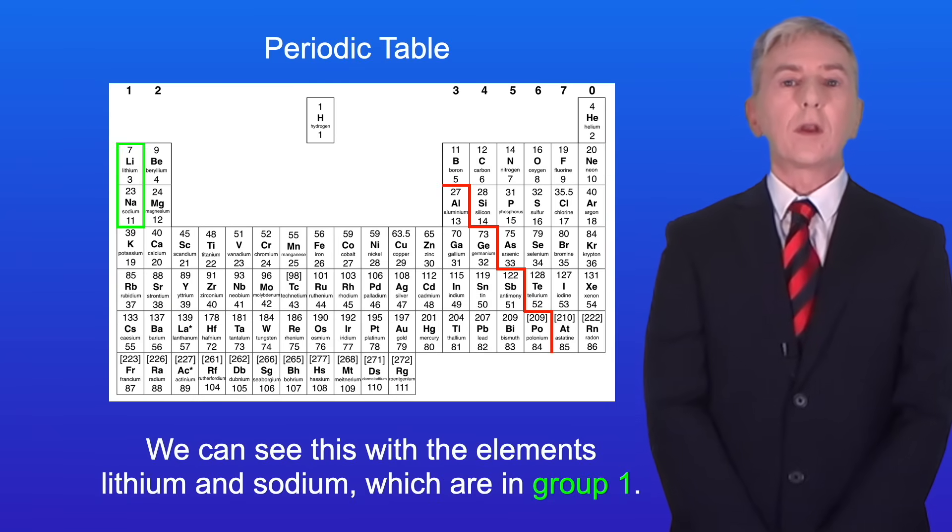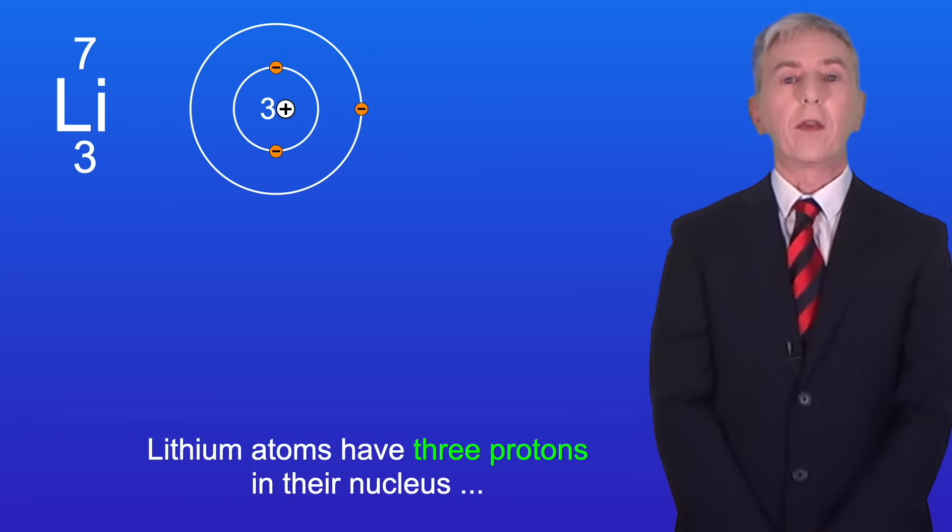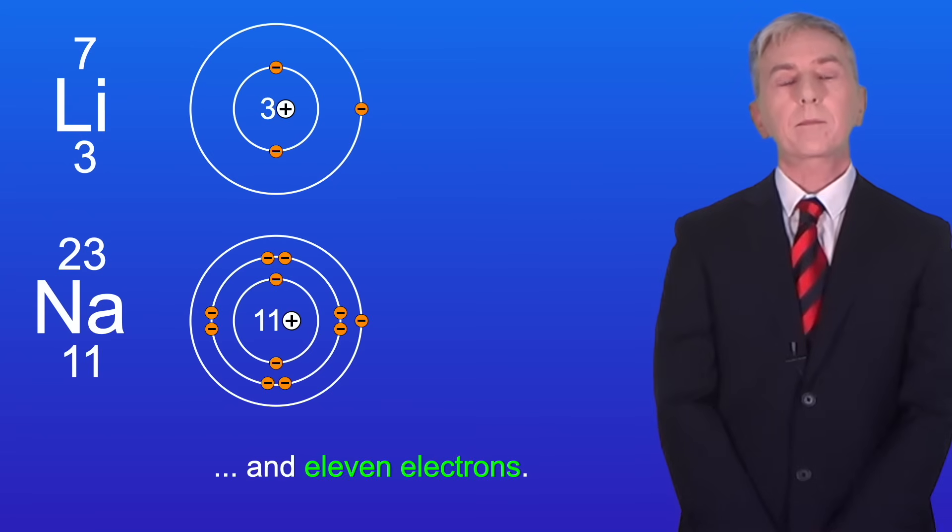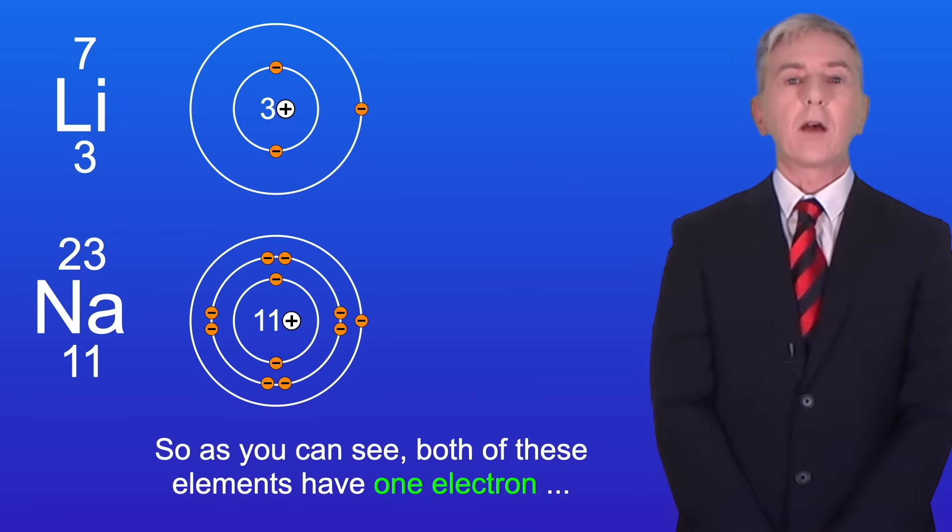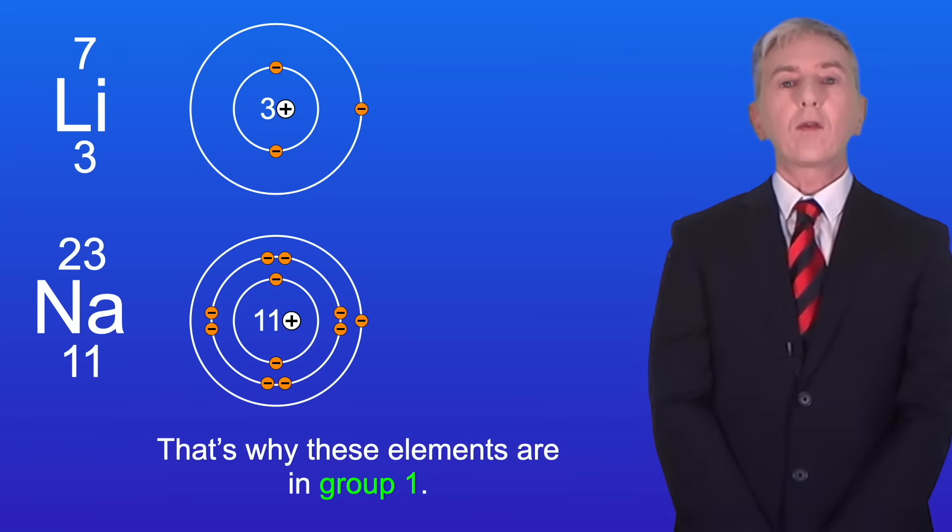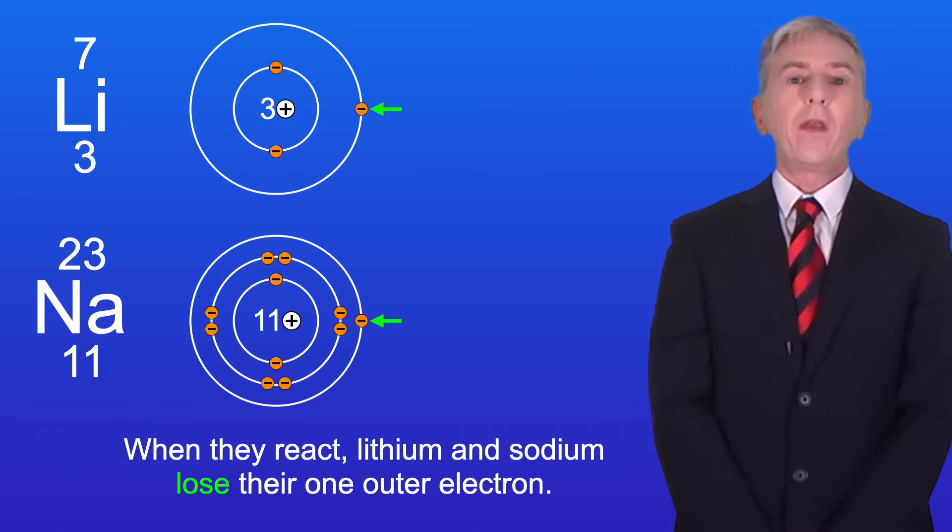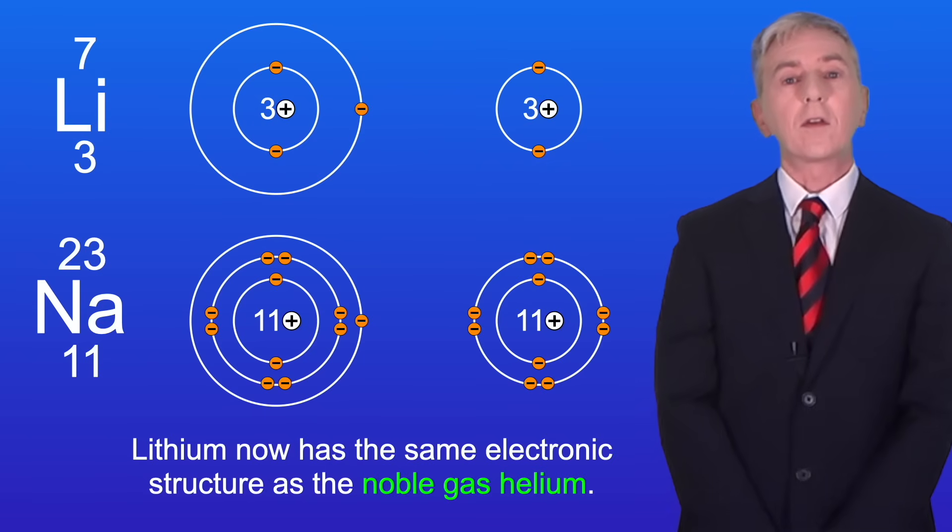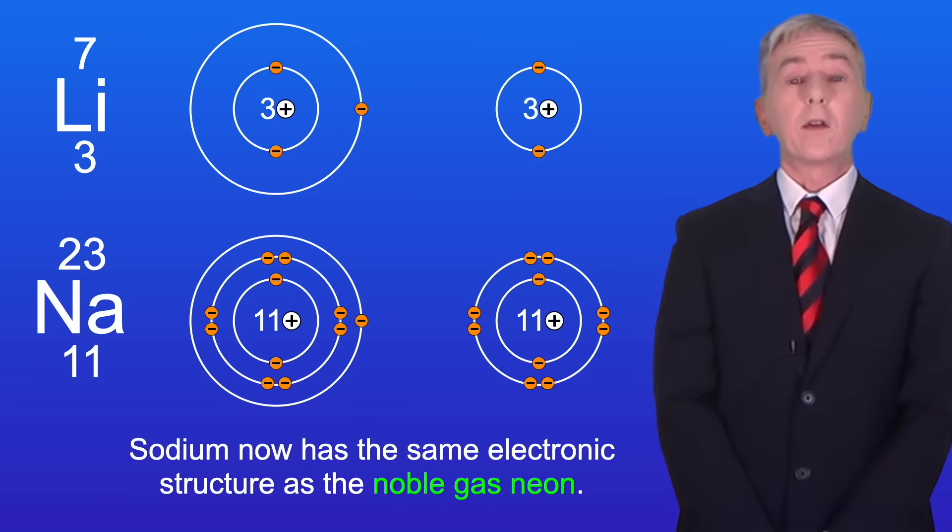We can see this with the elements lithium and sodium which are in group 1. Lithium atoms have 3 protons in their nucleus and 3 electrons. Sodium atoms have 11 protons in their nucleus and 11 electrons. So as you can see both of these elements have one electron in their outer energy level and that's why these elements are in group 1. When they react lithium and sodium lose their one outer electron and as you can see they've now got a full outer energy level. Lithium now has the same electronic structure as the noble gas helium. And sodium now has the same electronic structure as the noble gas neon.